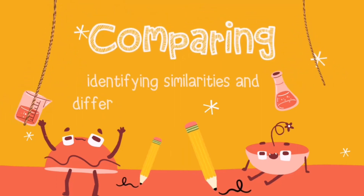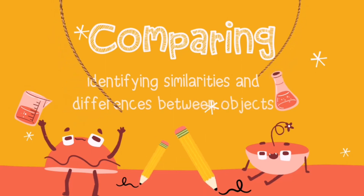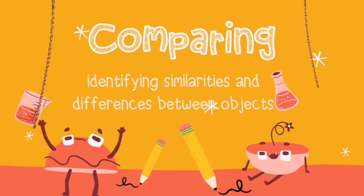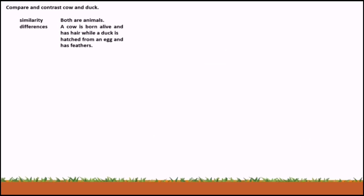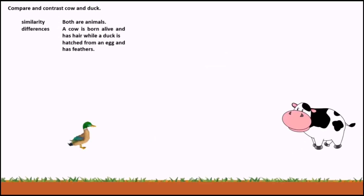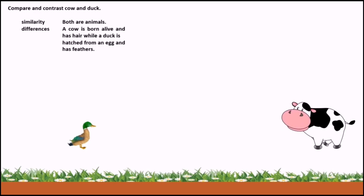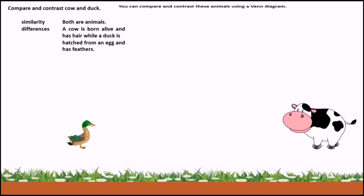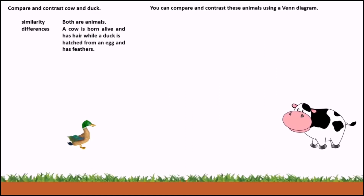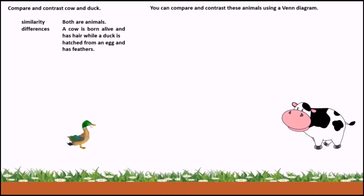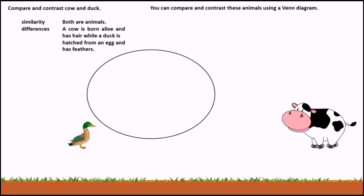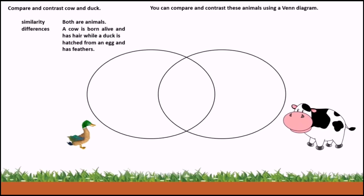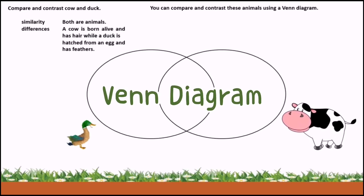The next science process skill is comparing. This skill is used in identifying the similarities and differences between objects. For example, compare and contrast cow and dog. For similarity, both are animals. For their differences, the cow is born alive and has hair, while a dog is hatched from an egg and has feathers. Take note that you can compare and contrast these animals using a Venn diagram.